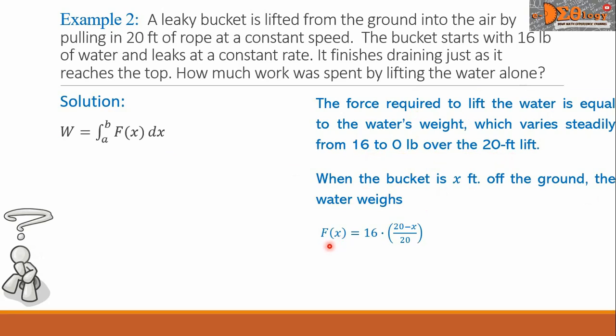that is the F of X, equals 16 times the fraction 20 minus X all over 20. We simplify the fraction into 1 minus X over 20. Then we multiply the 16 by this binomial. And the final answer will be 16 minus 4X over 5. This is our F of X given in pounds.